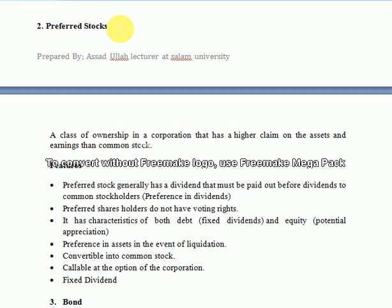While preferred stock is technically equity, it is similar in many ways to a bond issue. One type known as trust preferred stock can act as debt from a tax perspective and as common stock on the balance sheet. Several large established companies such as General Electric, Bank of America, and Georgia Power issue preferred stock to finance their projects.